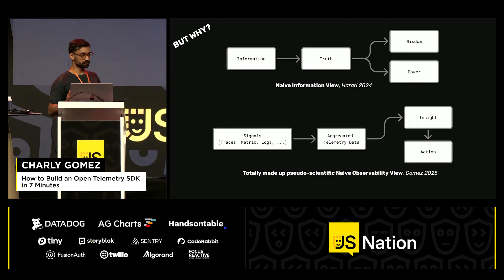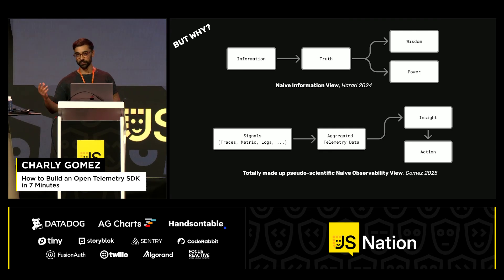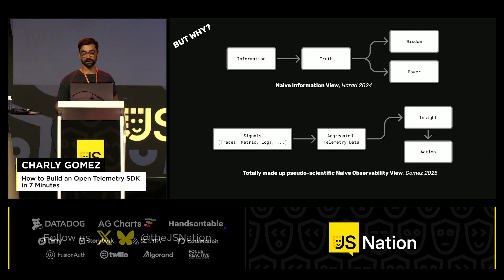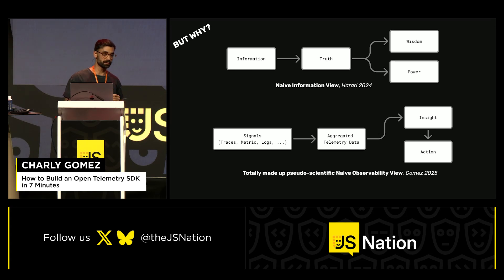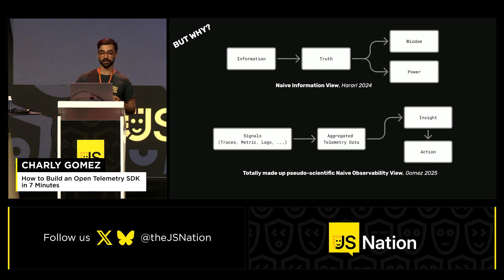Why do we need that? There is the notion that the more information you have, the closer you are to the truth and the more wisdom and power you gain from it. Mapped to OpenTelemetry or to observability, this would mean that the more signals your application is emitting, the more aggregated telemetry data you have, and the more insights and actions you can take out of it.